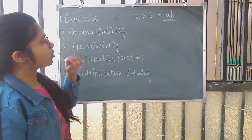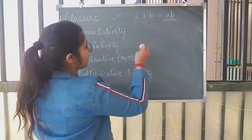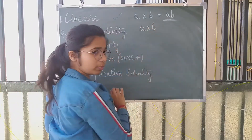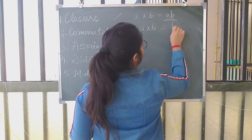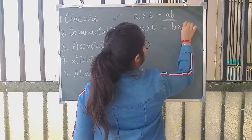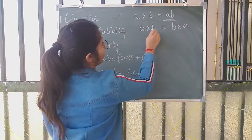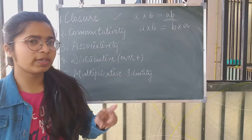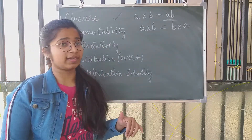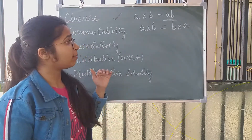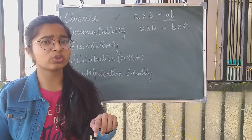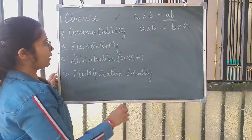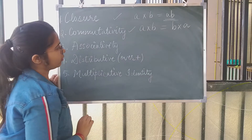Next comes commutativity. Commutativity means whether I multiply a by b first or b by a, they will always be the same. If I multiply 2 into minus 3, what do I get? Minus 6. If I multiply minus 3 into 2, what do I get? Minus 6. So, multiplication is commutative.